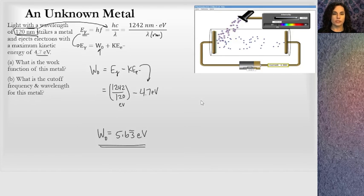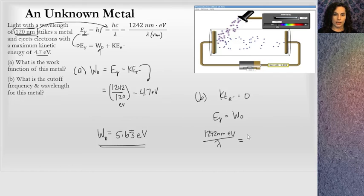What is the cutoff frequency? If I want to find the cutoff frequency, the kinetic energy in this situation is going to be zero, such as the energy of this incoming photon is equal to the work function. I have HC over lambda, or 1242 nanometers times EV divided by lambda, and that has to equal this work function. I'm solving for lambda. Lambda equals 1242 nanometers times EV divided by the work function, which is 5.63 repeating EVs. The EVs cancel on top and bottom, and so I get lambda equal to about 219 nanometers.